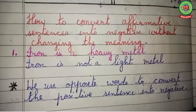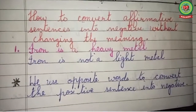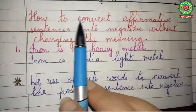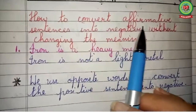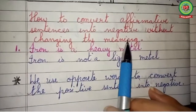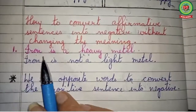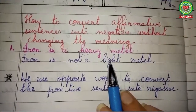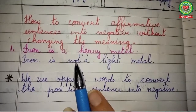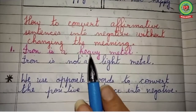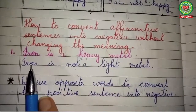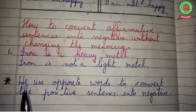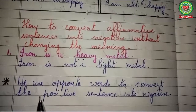There are two ways to convert affirmative to negative. One simple way is by adding 'no' and 'not,' which would change the meaning of the sentence. But today we will learn how to convert an affirmative sentence into a negative sentence without changing the meaning. For example: 'Iron is a heavy metal.' The opposite of 'heavy' is 'light,' and we add 'not' before it. The answer becomes: 'Iron is not a light metal.'